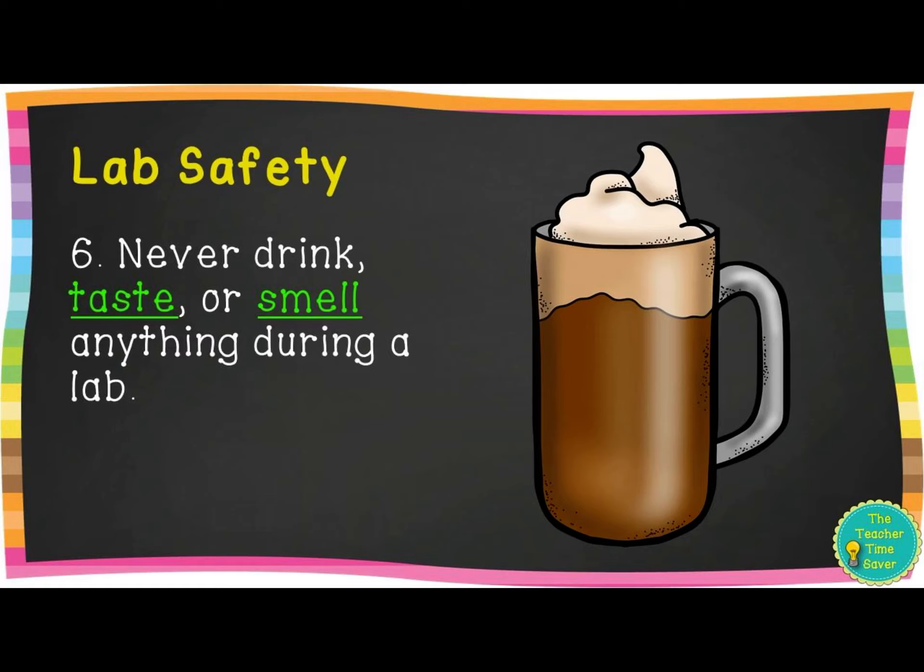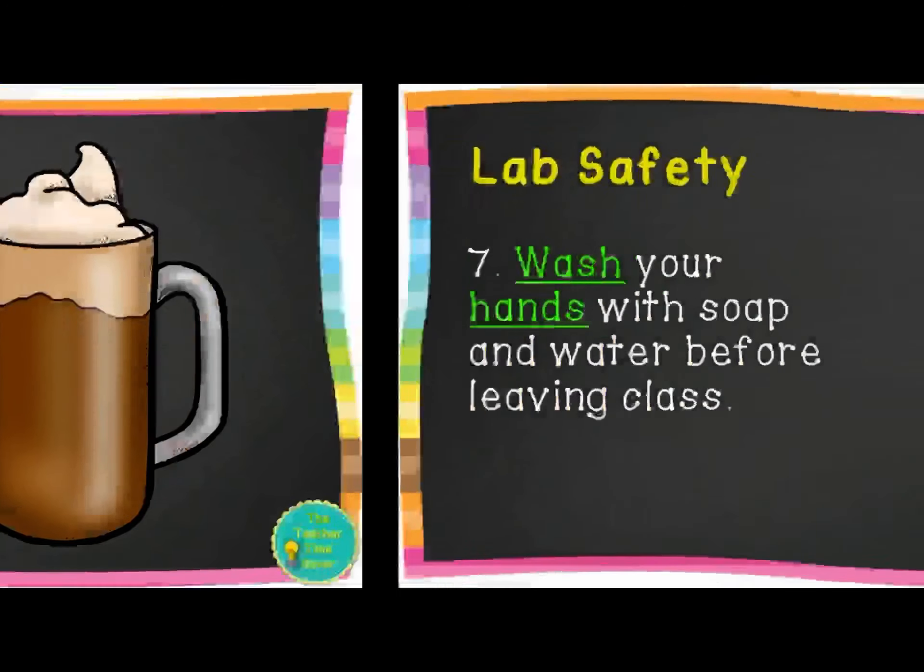Rule six: never drink, taste, or smell anything during a lab. This is really important, especially when you get to chemistry labs in high school and college, because a lot of the stuff you do labs with is really dangerous. If you taste it or even smell it, it can get into your body and do you a lot of harm — it can even cause brain damage. So be very careful about not tasting or smelling anything during a lab.